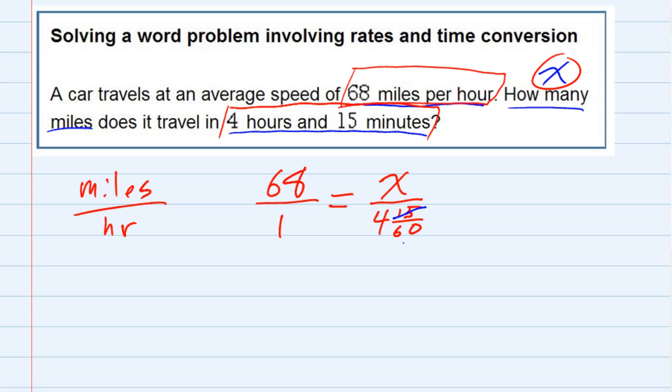15 goes into 15 once, 15 goes into 60 four times. So we could call that four hours and a quarter. So now that we have our proportions set up, we can solve these by multiplying diagonally.